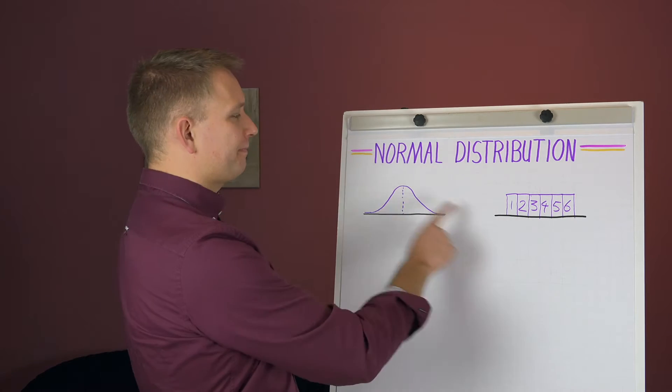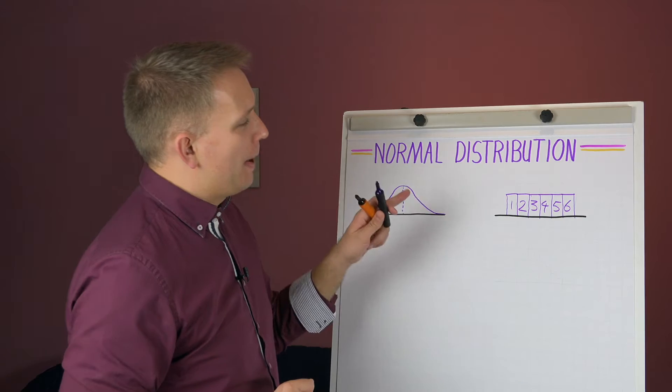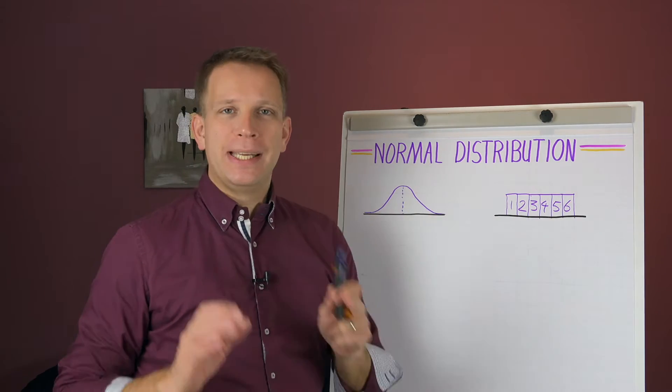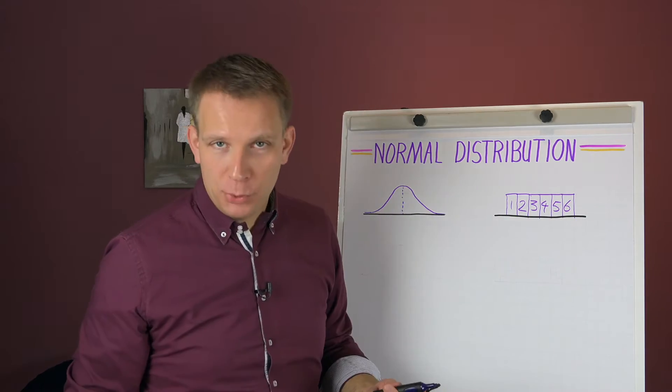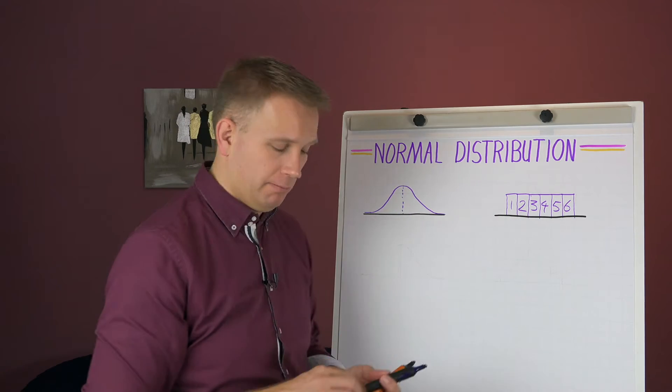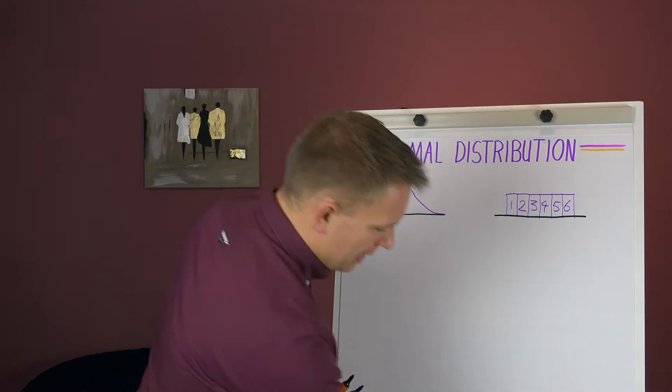Now, this really doesn't look like a normal distribution, now does it? But at least it gets in the idea of a histogram and a distribution. And I hope that this is a simple one. You know a six-sided die.